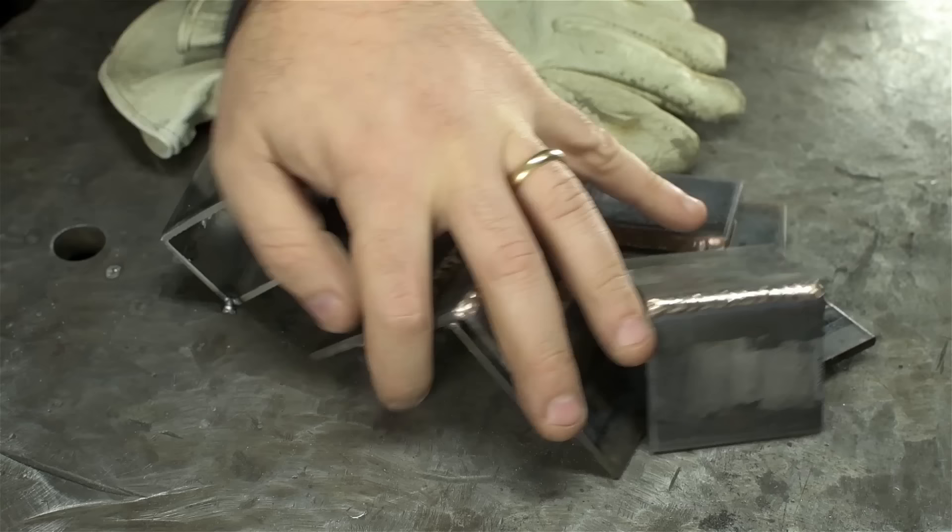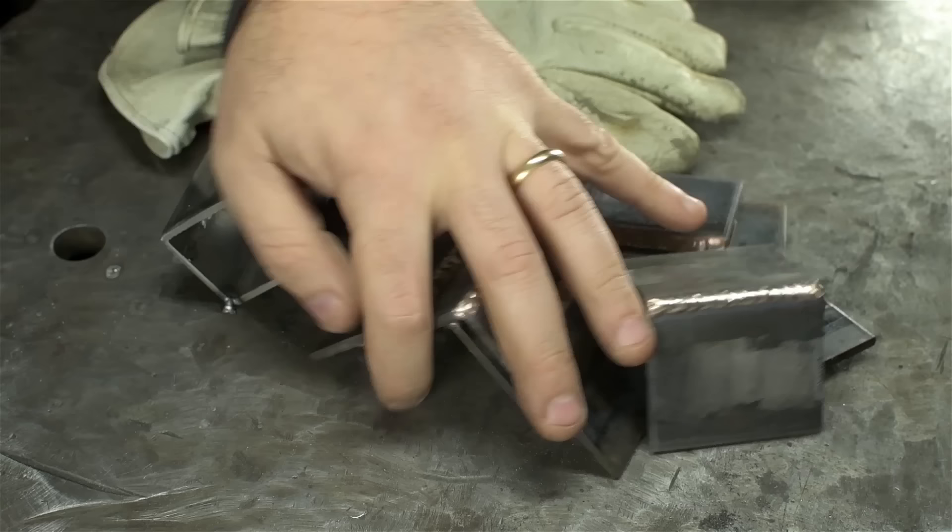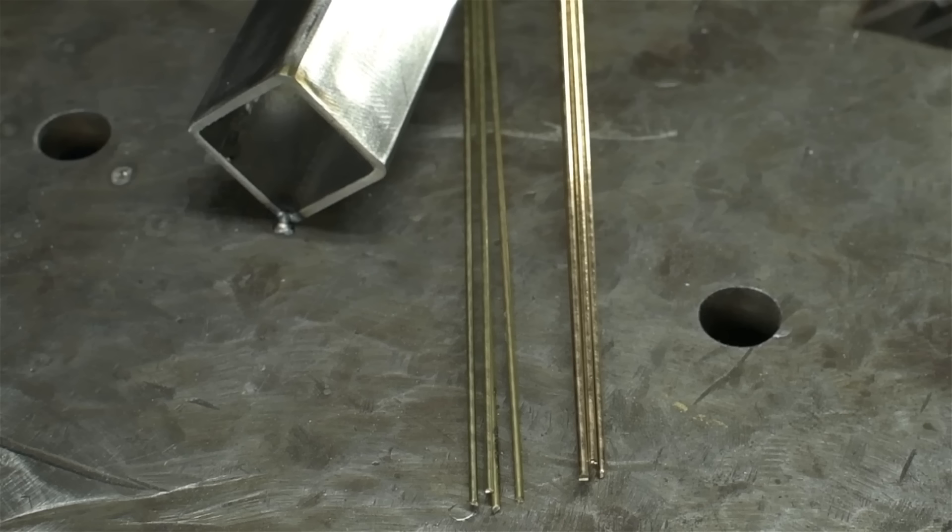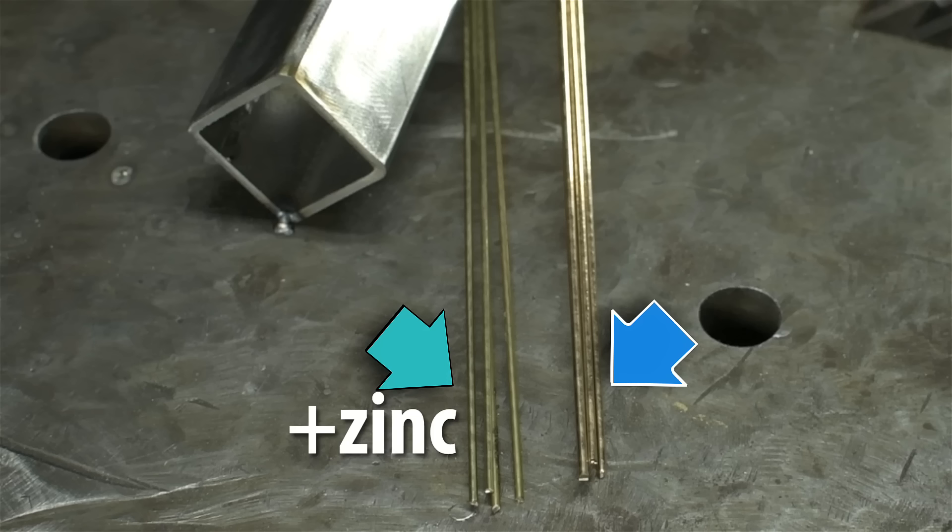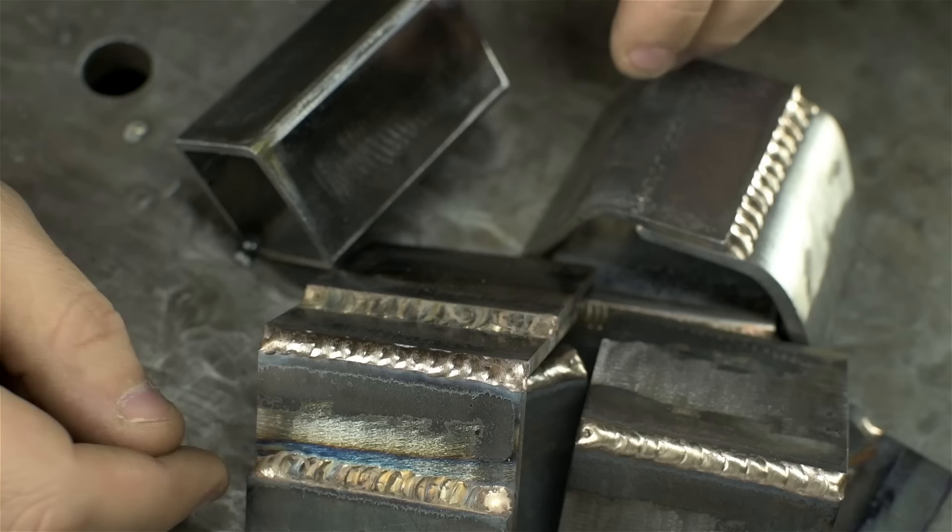Oh, and by the way, do not try to TIG braze using bronze meant for gas brazing. Looks almost identical, I know, but the gas brazing stuff has zinc in it. The TIG brazing rod does not. If you try to TIG with gas rod, you'll foul everything. The joint, the torch, your helmet, your language, everything. Don't ask me how I know.